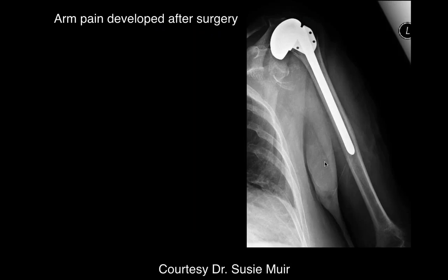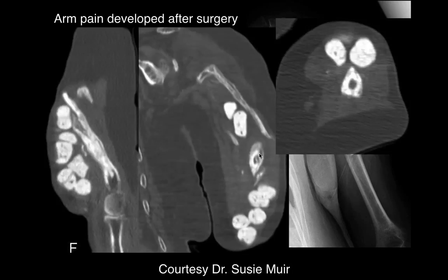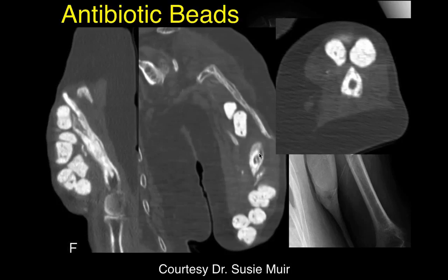In this patient who developed arm pain after total shoulder arthroplasty, the frontal radiograph shows the prosthesis with periprosthetic fractures. CT images show multiple hyperdense lesions — antibiotic beads. After removal of the implant and IV antibiotics, antibiotic-impregnated beads were placed, which slowly leach antibiotic over many weeks. This is another treatment option for prosthetic joint infections.